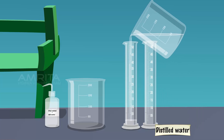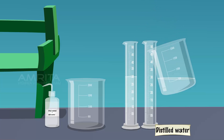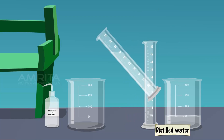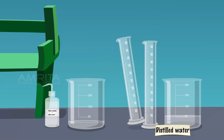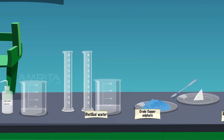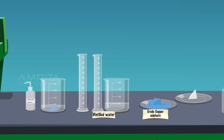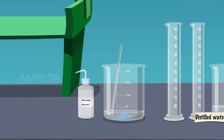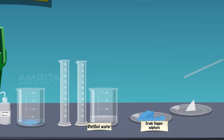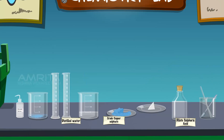Take 30 ml of distilled water in the measuring cylinder and pour it into the clean beaker. Take a small quantity of powdered crude sample of copper sulphate using the spatula. Add copper sulphate into the beaker containing distilled water. Stir the contents of the beaker well using the glass rod to dissolve it. Make several additions of the powdered sample till a little of it remains undissolved even after stirring for some time.